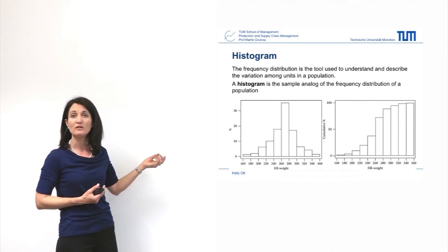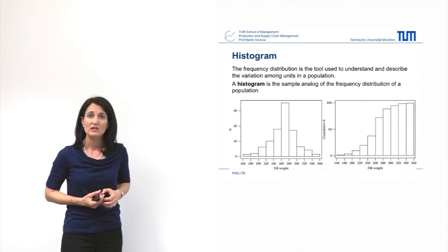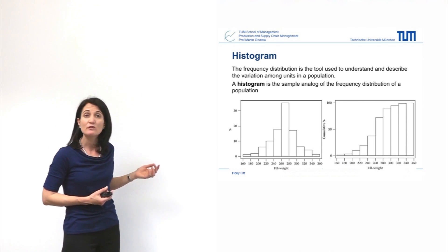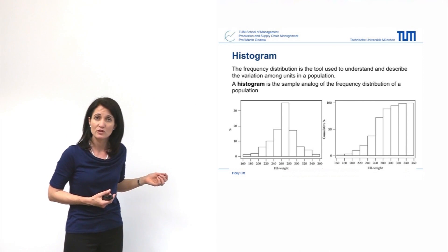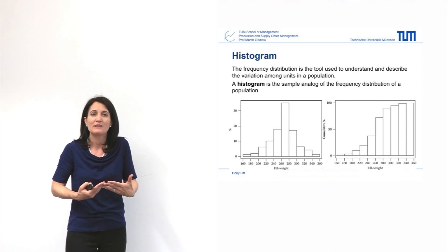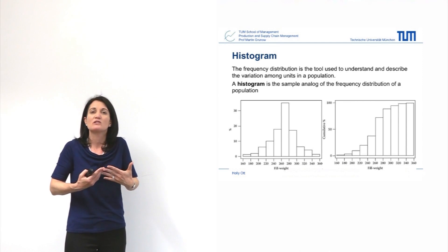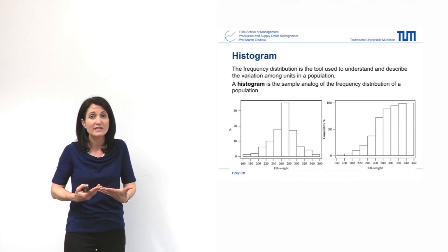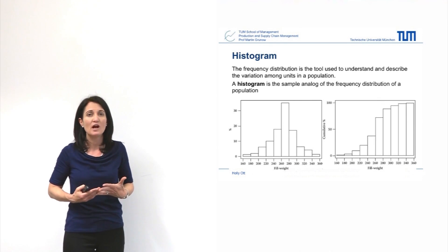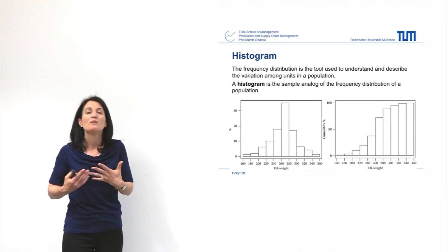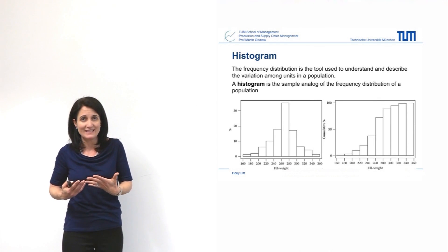Here is an example of histograms. A histogram is a frequency distribution where you look at how many times a certain data point has occurred, or a certain range of data points have occurred, and you plot them in a bar graph, so you can see where most data is appearing.